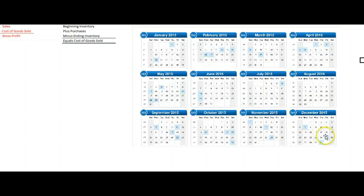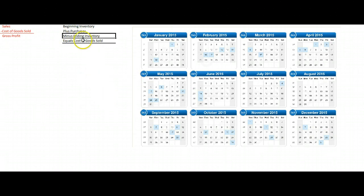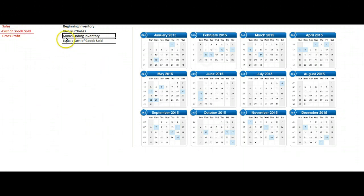You're running a business using the periodic inventory system. Every time you make a sale, you record the sale but you do not update your inventory. You get to December 31st, you finally take an ending inventory, so now you know how much goods you had at the end of the year. You know your beginning inventory, you add your purchases, you subtract the ending inventory, and now you know what your cost of goods sold was.